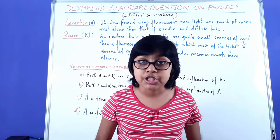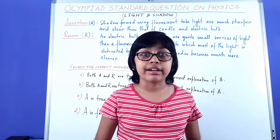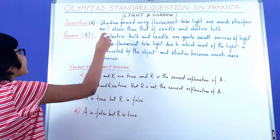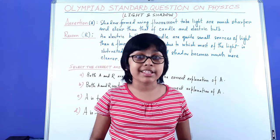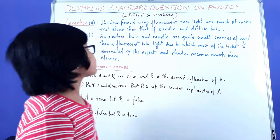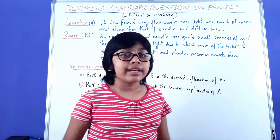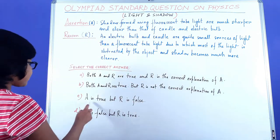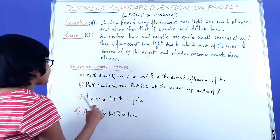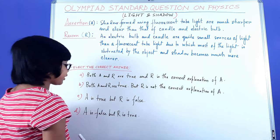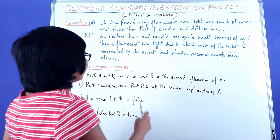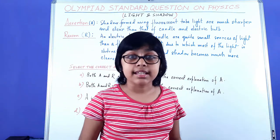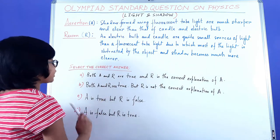Now that we've understood the options, we need to know how to analyze them quickly — how to eliminate options. When we have the assertion and reason, first read the question and check whether both are correct or if one is wrong. If both are correct, we can immediately eliminate the options where A is true but R is false, and where A is false but R is true. So options C and D can be eliminated, and we only need to consider A and B.